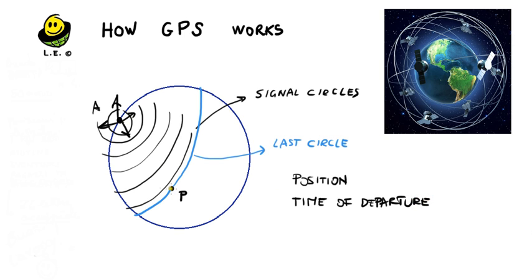When the signal gets to P, that is the receiver in his position, the receiver from his watch can find the time of arrival. From these two data, he can evaluate the duration of the journey of the signal from satellite A to his position. If he knows the speed of the signal, he can also evaluate the radius of this last circle.